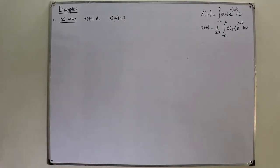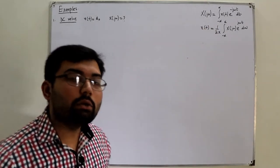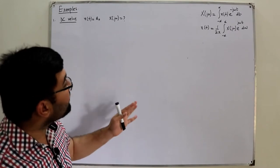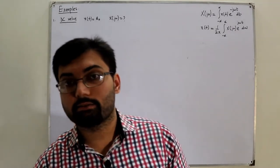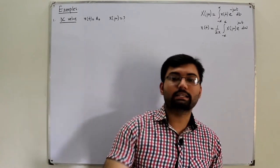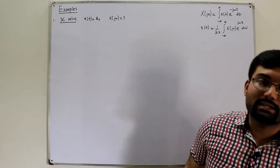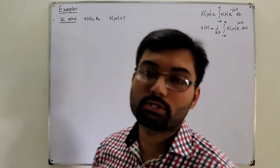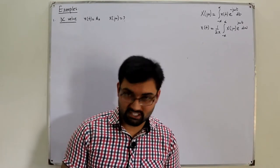We have the formula for Fourier transform, but the condition for this formula to work is that the signal must be absolutely integrable. And is this signal an absolutely integrable signal? No. Which means we cannot use this formula for finding the Fourier transform of this signal.